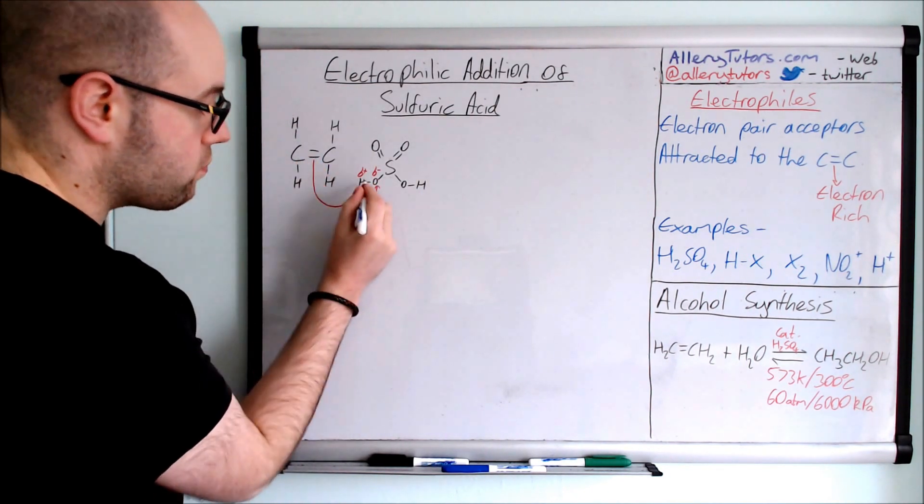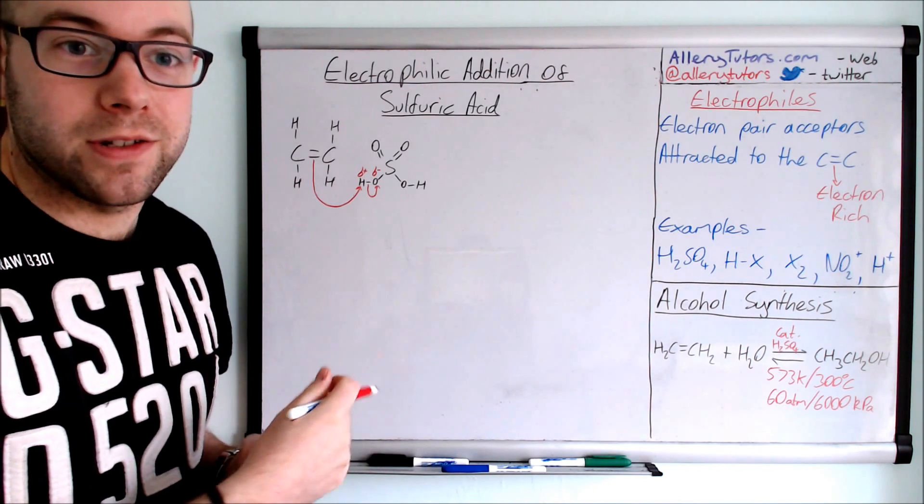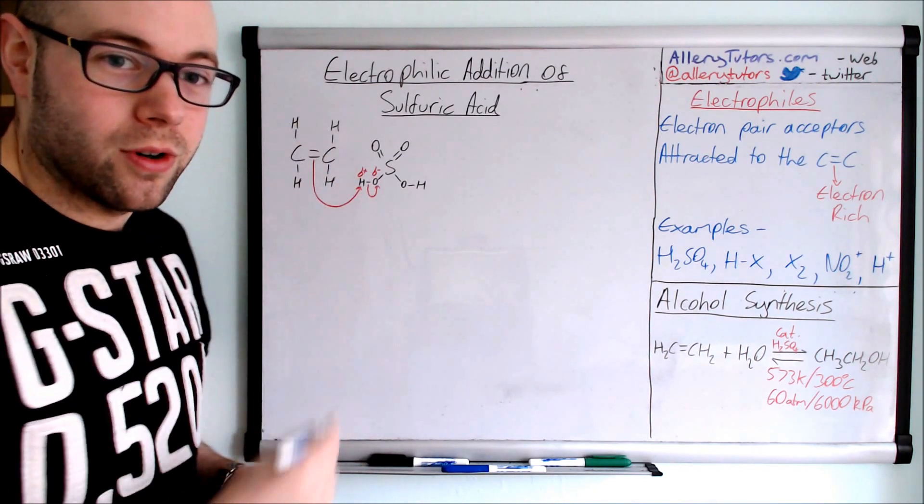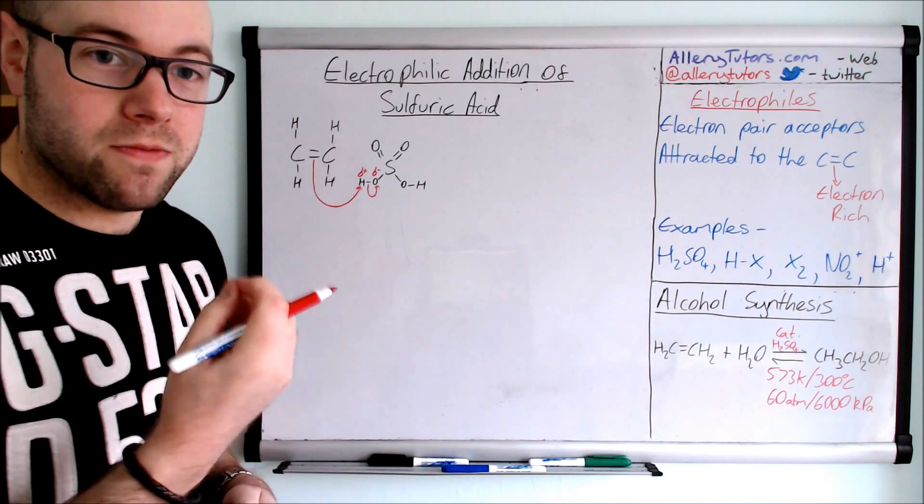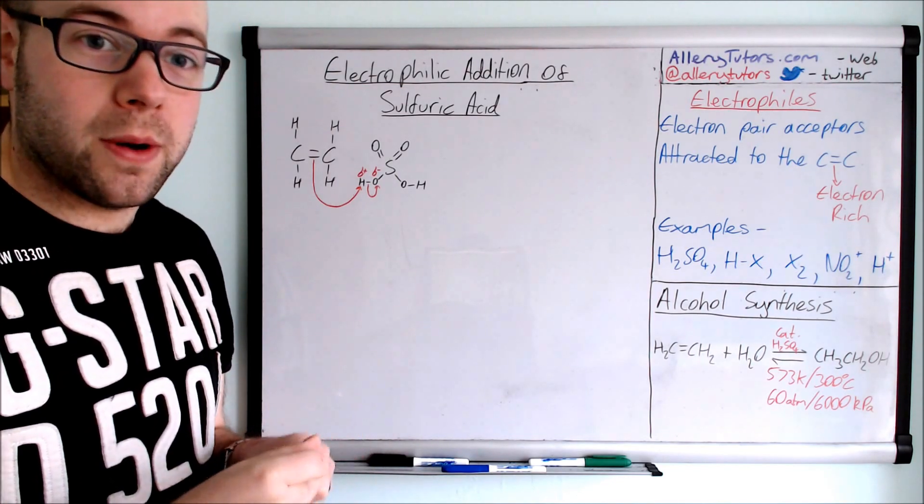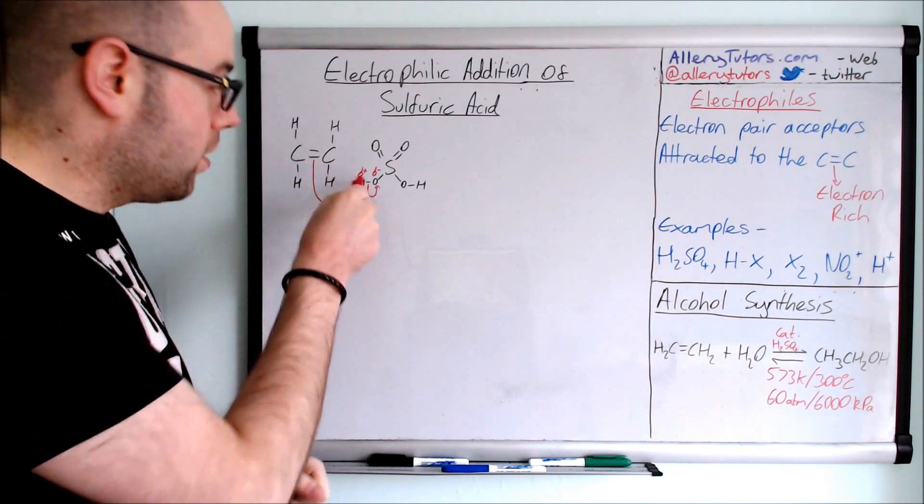So you must be really specific with your arrows. If you're very sloppy with your arrows and you're not, and you're just kind of loosely drawing them everywhere, you may not get the marks. You've got to be really obvious where the electrons are going from, from the alkene onto there.